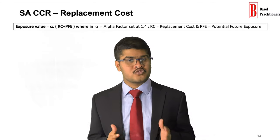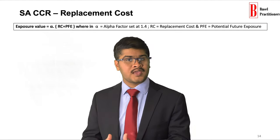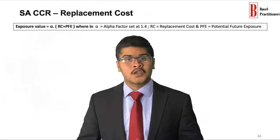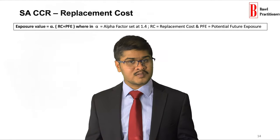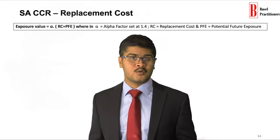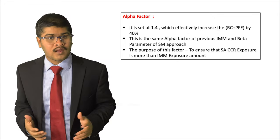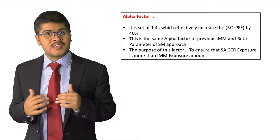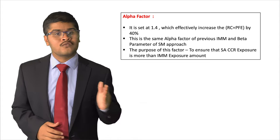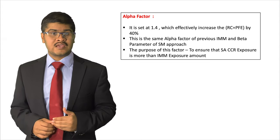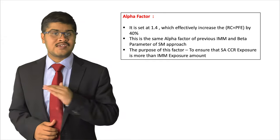So how do we compute the exposure amount as per the SA-CCR guidelines? It is basically the alpha factor multiplied by RC plus PFE, where alpha stands for the alpha factor set at 1.4, RC is the replacement cost, and PFE is the potential future exposure. The alpha factor is set at 1.4, effectively increasing the RC plus PFE by 40%. The value of 1.4 has been carried over from the alpha factor set by Basel Committee for the internal model method and the beta parameter within the ESM.